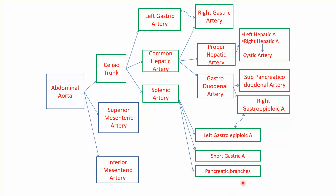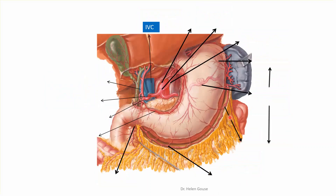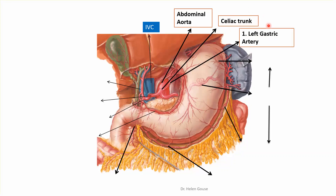These are all the branches of the celiac trunk. In the diagram, this is the inferior vena cava, and to the left of it you will see the abdominal aorta. You can see the first major branch — the celiac trunk at T12 level — giving the first branch, the left gastric, along the lesser curvature. Then you can see the splenic artery, which is posterior to the stomach and is also a tortuous artery.